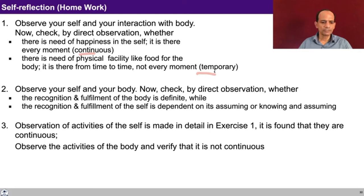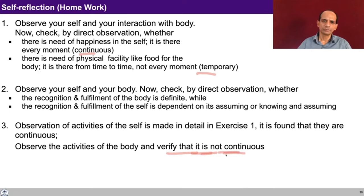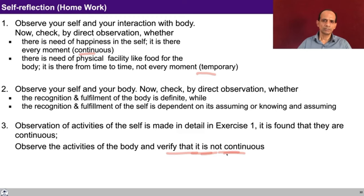Thirdly, observation of activities of the self is made in detail in exercise one and it is found that they are continuous. So observe the activities of the body and verify that it is not continuous. Try to observe the activities of the body and try to see whether there is any activity which is continuous, or whether every activity of the body is temporary. For example, breathing: you inhale and you exhale — neither inhaling is continuous nor exhaling is continuous. If you look at the heartbeat, the heart is expanding and contracting — neither expansion is continuous nor contraction is continuous. Now this is something that you have reasoned out; can you observe it directly for yourself? This is the assignment for you after this lecture.